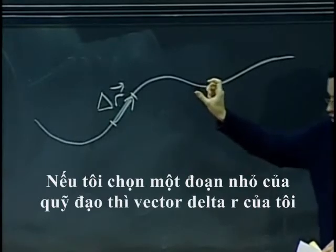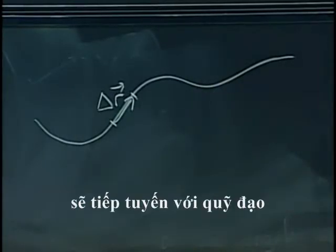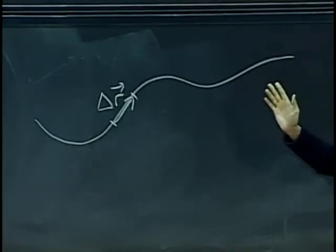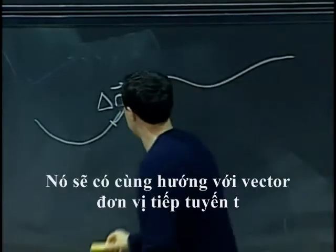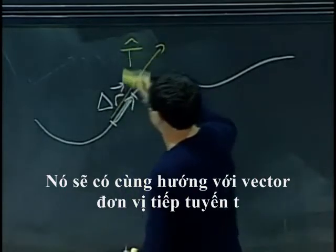If I take a very small piece of a trajectory, then my vector delta r will be tangent to the trajectory. It will be going in the same direction as the unit tangent vector t.